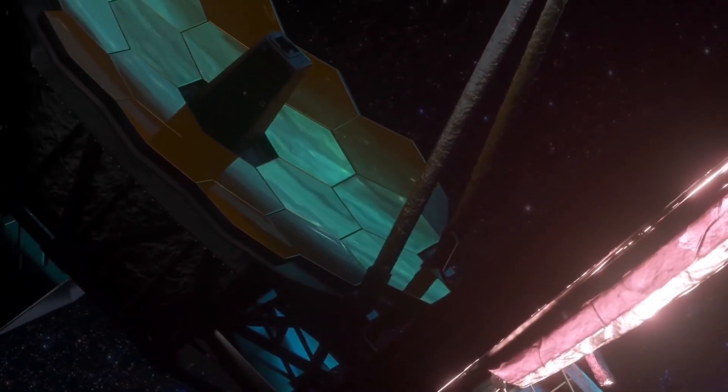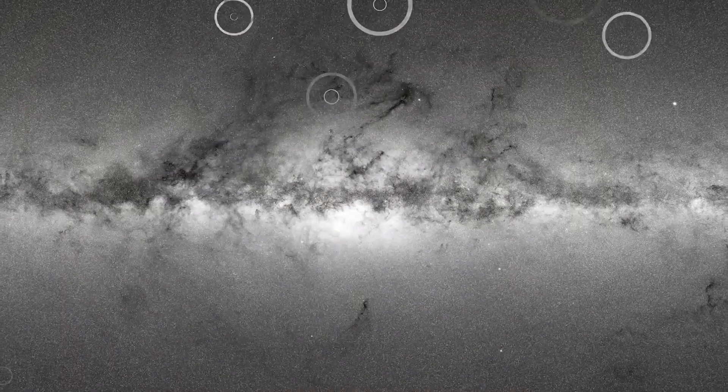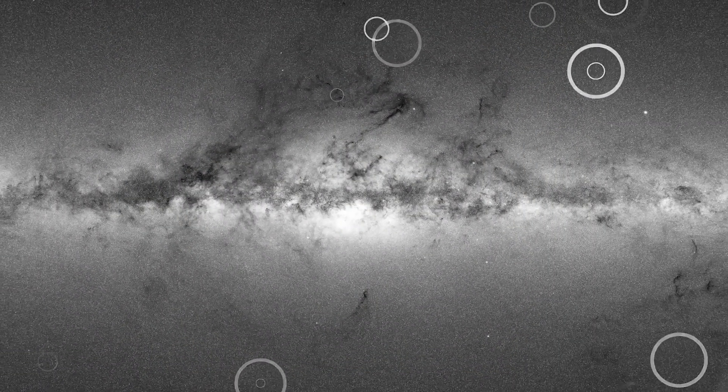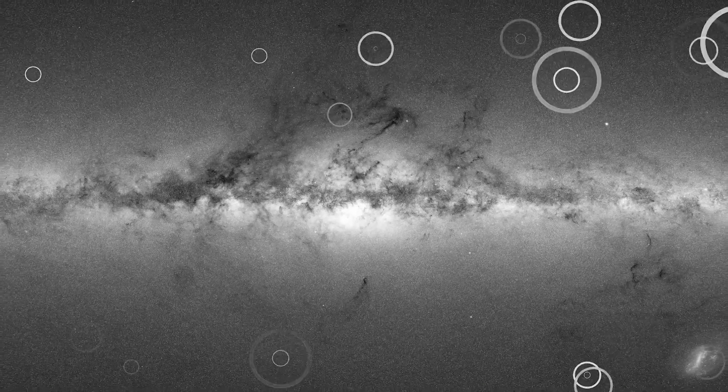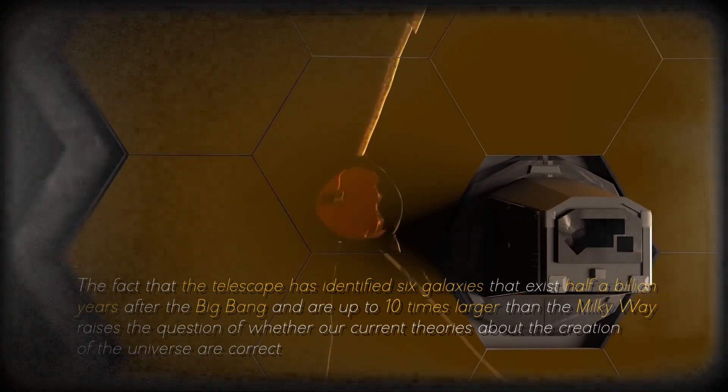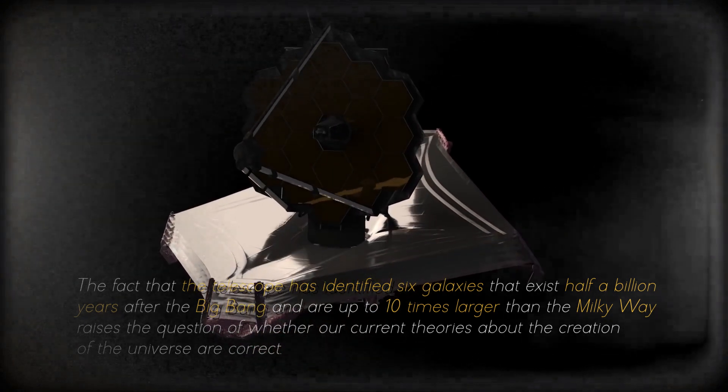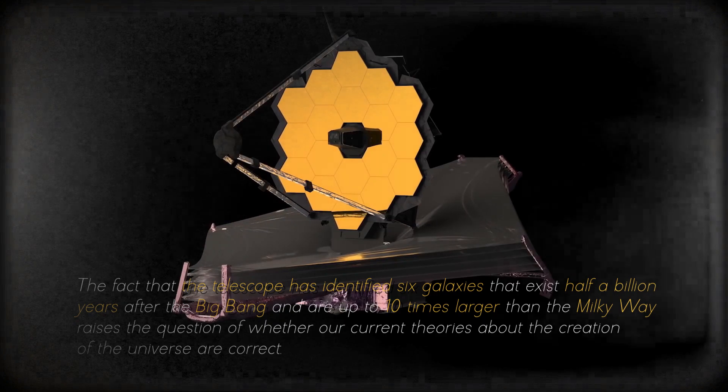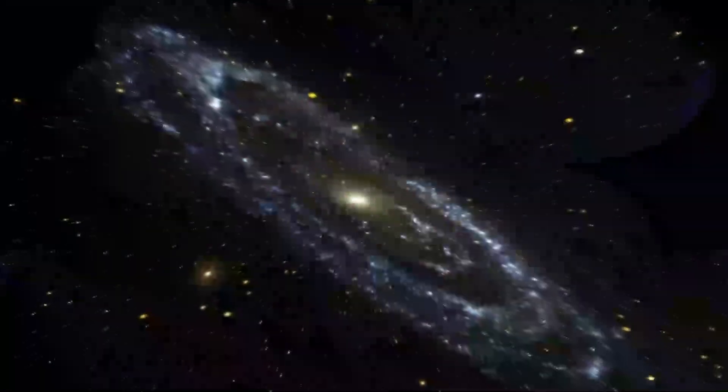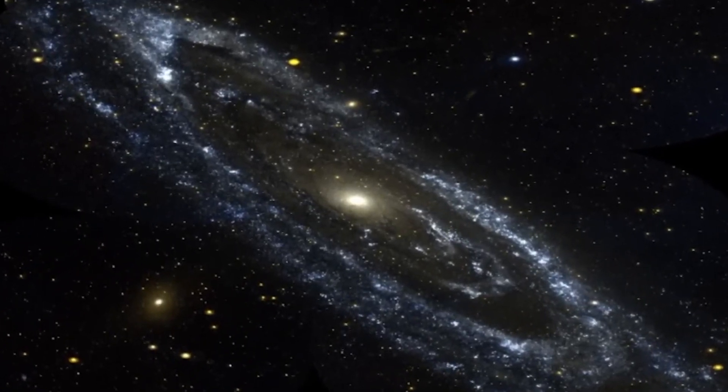According to theoretical physicist Michio Kaku, the discovery of ancient galaxies by the James Webb Space Telescope has called into question everything we knew about the beginning of the universe. Previously, these galaxies were thought to be less developed than the Milky Way, but the new findings suggest that we may be missing crucial information. The fact that the telescope has identified six galaxies that exist half a billion years after the Big Bang and are up to ten times larger than the Milky Way raises the question of whether our current theories about the creation of the universe are correct. Kaku explained that it takes billions of years to create a galaxy like the Milky Way, so it is strange to find such large, young, primordial galaxies. This discovery may require us to revise and rewrite textbooks on the beginning of the universe.